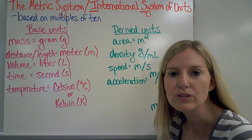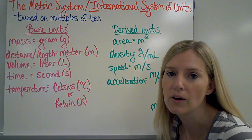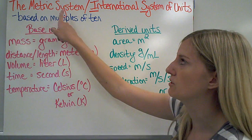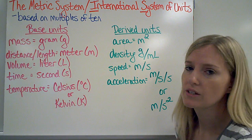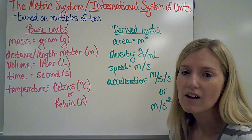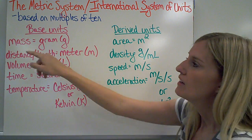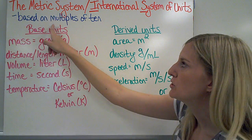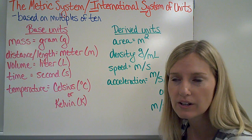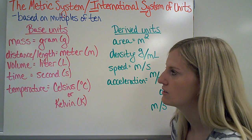In science, we don't use the units that we use in our everyday lives, like inches or pounds or miles. We use metric system units. The metric system is also known as the International System of Units — we call them SI units. These are going to be based on multiples of 10, which makes it a lot easier to convert from one to another. We use base units in this system.